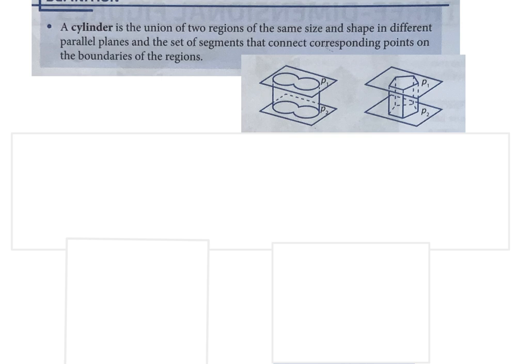A cylinder is the union of two regions of the same size and shape in different parallel planes and the set of segments that connect them. We typically think of a cylinder as a circle on the top and bottom, but it's any shape that is identical on parallel planes, with everything connecting them in between on the exterior.